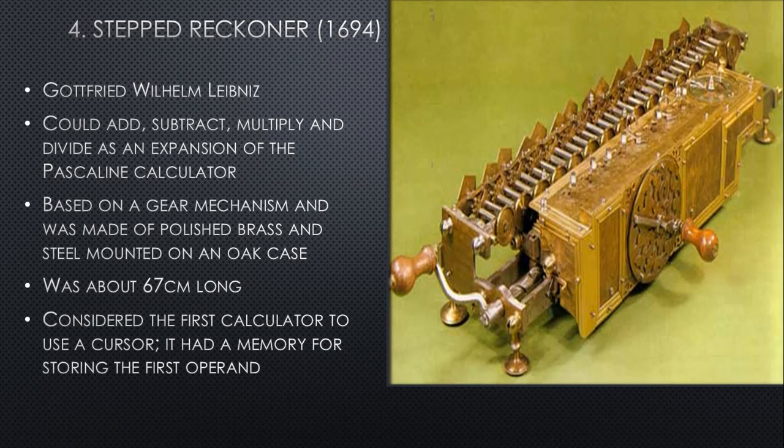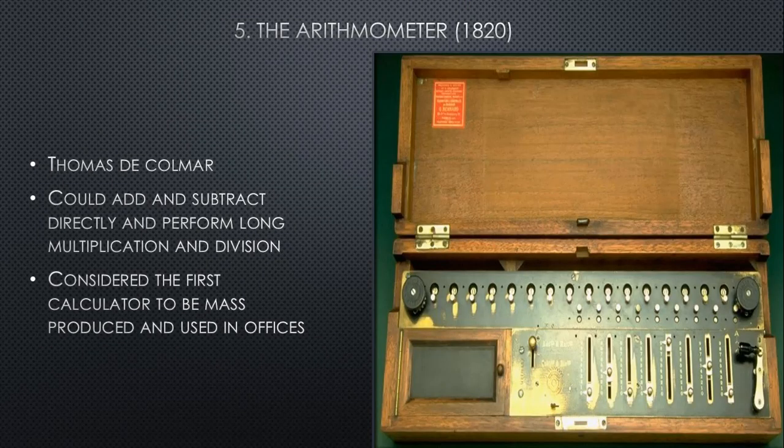The Stepped Reckoner was invented by Gottfried Wilhelm Leibniz, a German mathematician, in the year 1694. This device could add, subtract, multiply, and divide — as an expansion of the Pascaline calculator, meaning it could do more. The Stepped Reckoner was based on a gear mechanism and was made of polished brass and steel mounted on an oak case. It was about 67 centimeters long and is considered the first calculator to use a cursor.